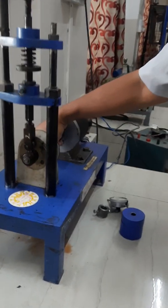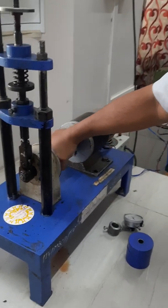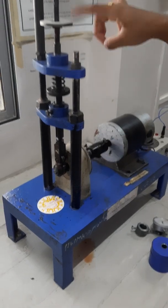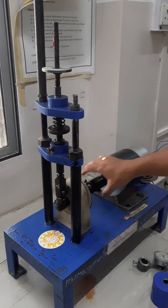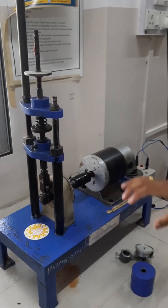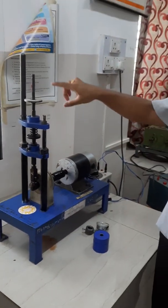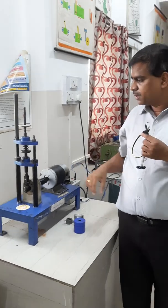So what happens is when we are rotating this cam, you can see that we are getting a reciprocatory motion at the follower. Now first of all, we have to find the profile of this cam.